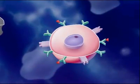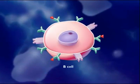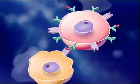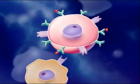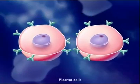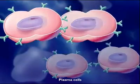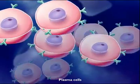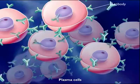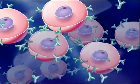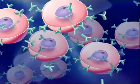B-cells also come in millions of different types, each able to recognize a particular antigen. When B-cells become activated by T-helper cells, they differentiate into plasma cells. These plasma cells become antibody-producing factories, flooding the bloodstream with antibodies that can bind to the antigen involved in this infection.